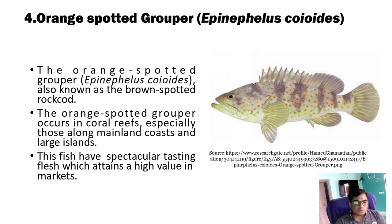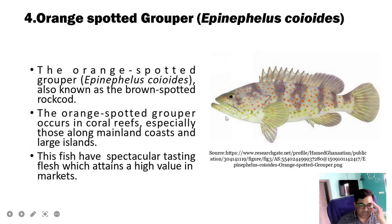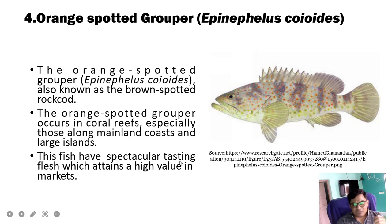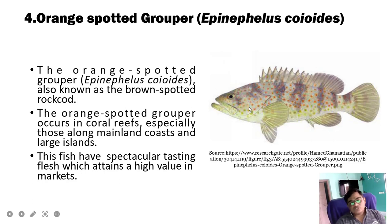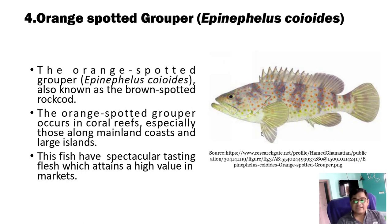The Orange Spotted Grouper (Epinephelus coioides), also known as the brown-spotted rockcod, occurs in coral reefs especially those around mainland coasts and large islands. This fish has spectacular, tasty flesh which attains a high value in the market, and is therefore also used as a good species for mariculture activity.